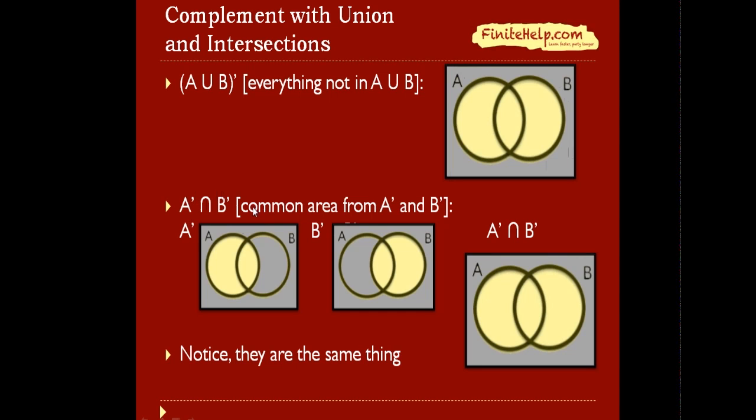A prime intersect B prime would represent the common area from A prime and B prime. So first, let's break it down to A prime and B prime themselves. Here you can see this is A prime and this is B prime. So we want the intersection of these two, which is the common area between these two. And as you can see, this outside shaded area is what's common between the two. So A prime intersect B prime would be only the shaded area outside of A and B.